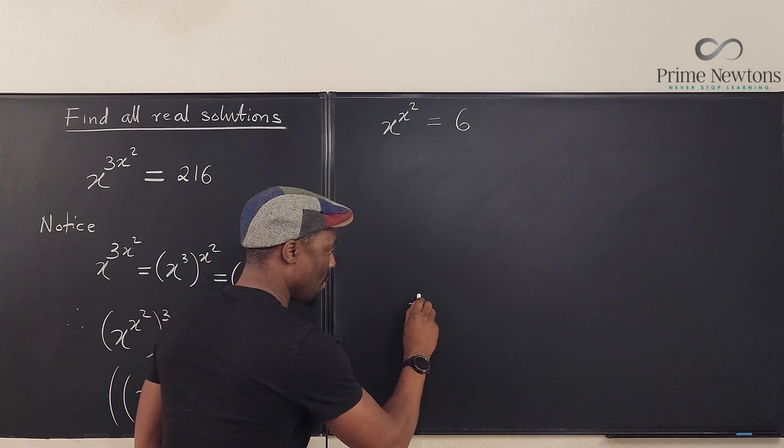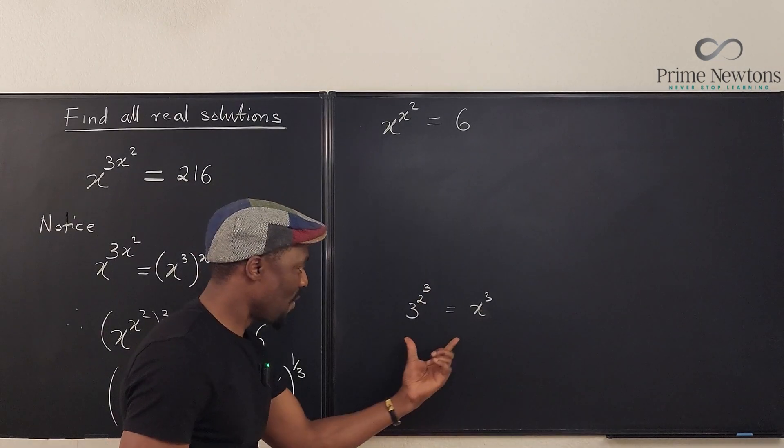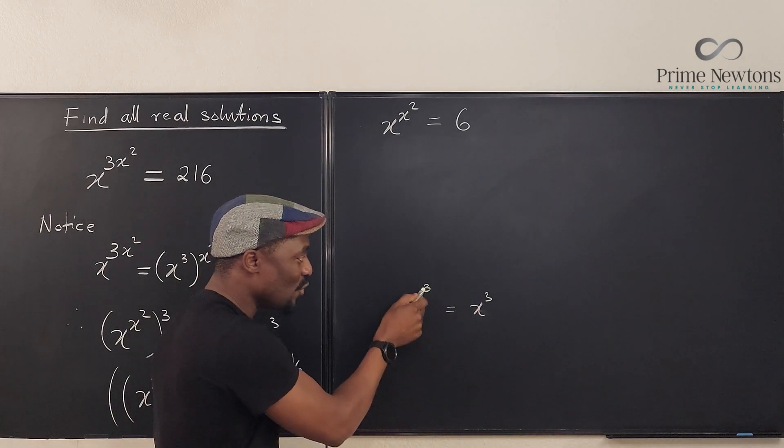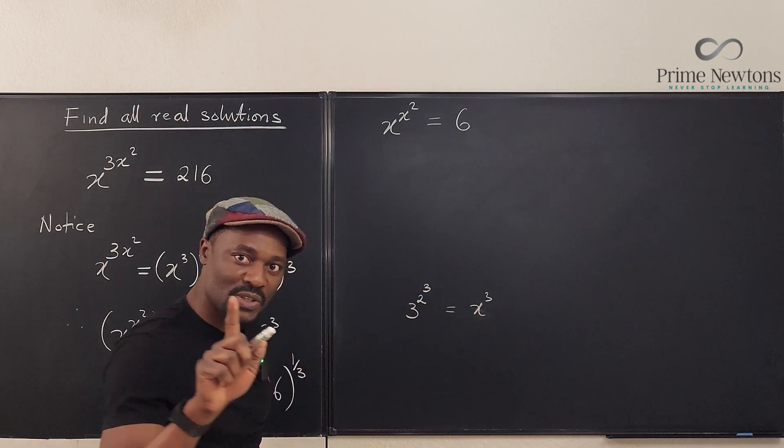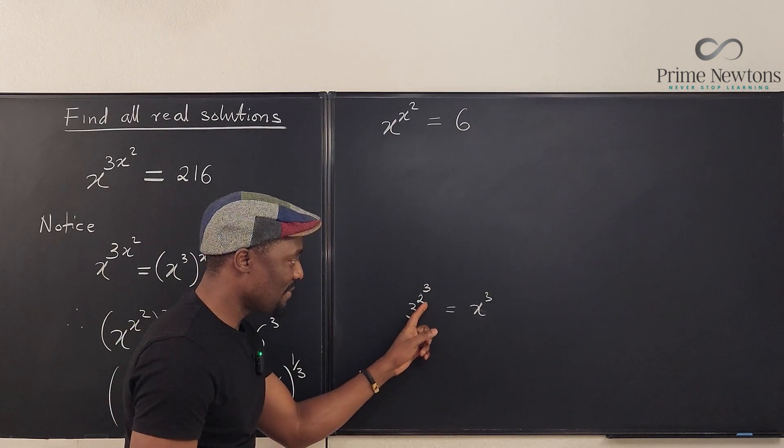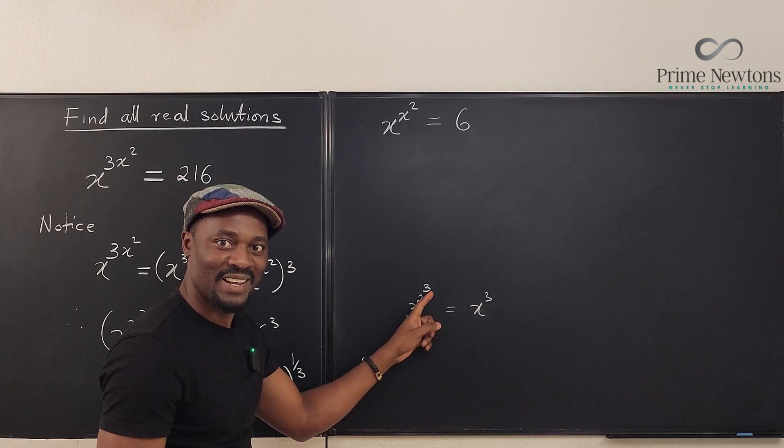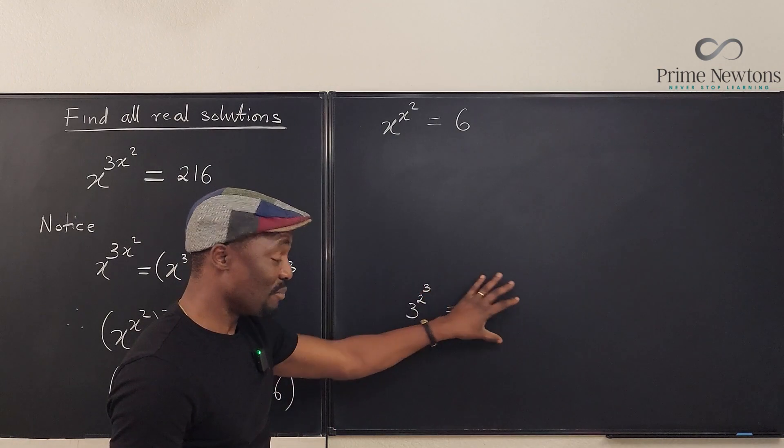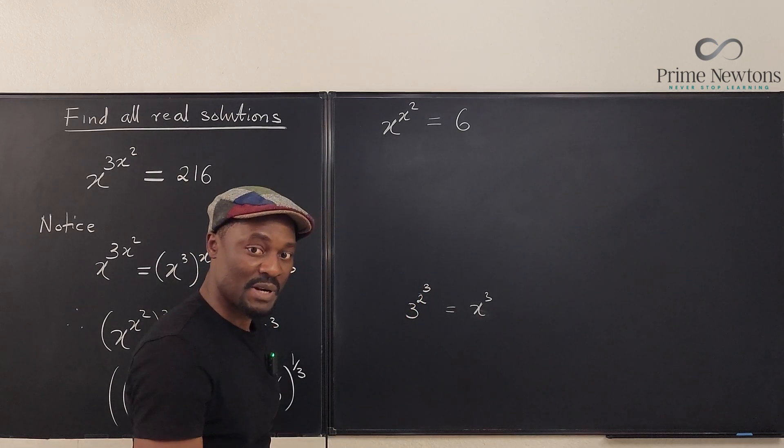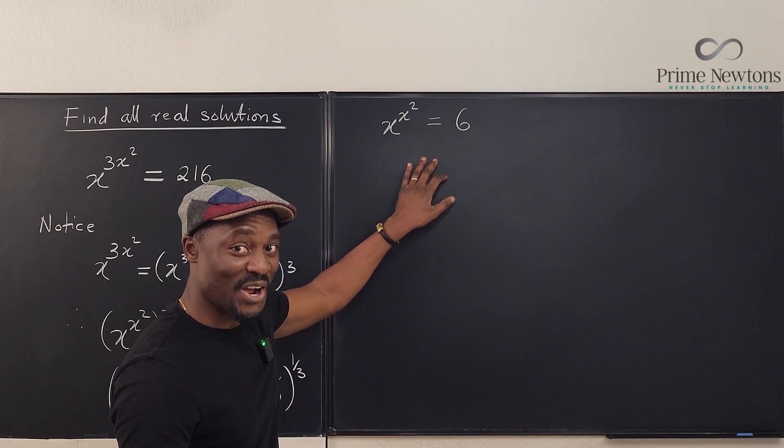Look at this. 3 raised to power 2 raised to power 3. The way this is, you can't take the cube root of both sides to get rid of this. You cannot get rid of this. What you can get rid of is this guy here. But you can't get rid of it because it's raised to power 3. So this is more complicated than what you would normally do if it was just a simple exponent.